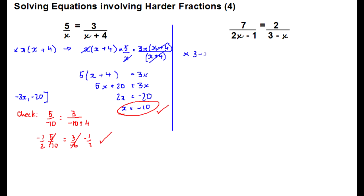In the next example, let's see a faster way. We're going to multiply both sides by 3 minus x times 2x minus 1 because that's the product of the denominators. But what happens, if you notice on the first example, the x plus 4 is moved from the bottom right to the top left and the x on the bottom left has moved to the top right.